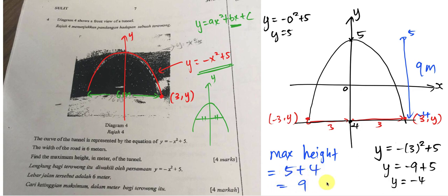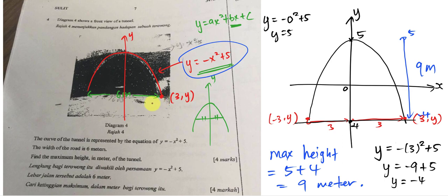So the maximum height of the tunnel equals 5 plus 4, which is 9 meters. This question isn't too hard, but you need to understand two key ideas: first, when there's no bx term the curve is symmetric on the y-axis; second, the 6 meter width gives you the coordinate to locate the x-axis and find the maximum height. I hope this video helps — thanks for watching!